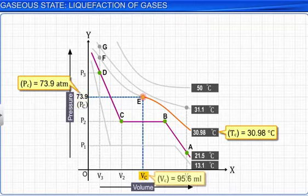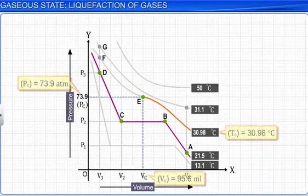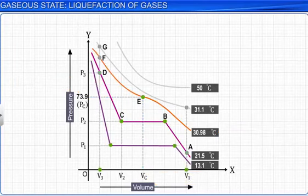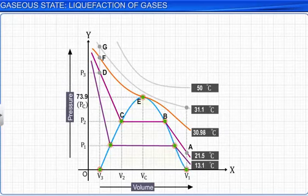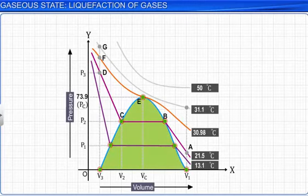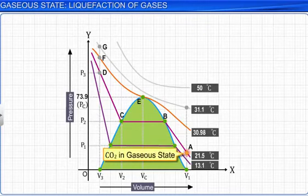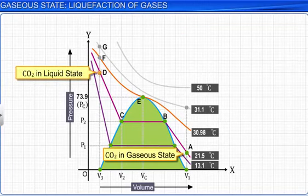As you can see, all the ends of the horizontal portions of the isotherms are joined to form a dome-shaped curve as shown here. Point A represents the gaseous state, whereas point D represents the liquid state. All points within the dome-shaped area represent the existence of liquid and gaseous carbon dioxide in equilibrium.